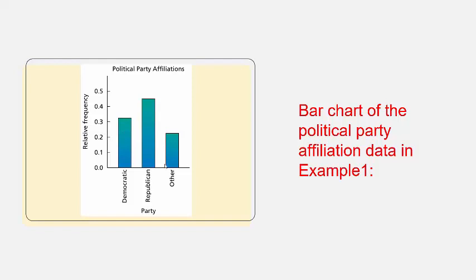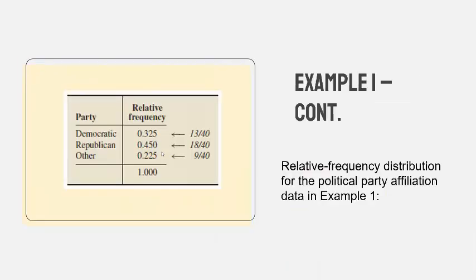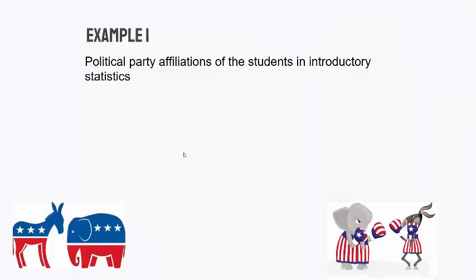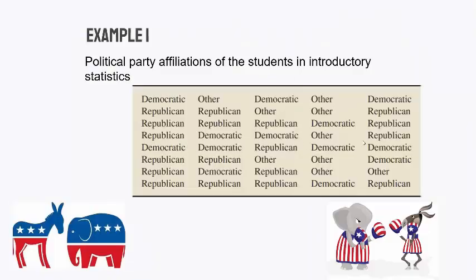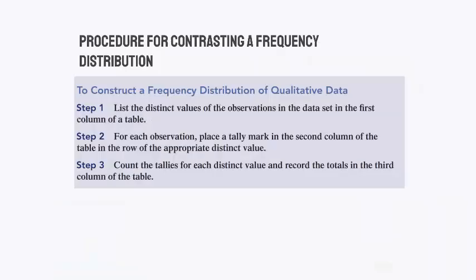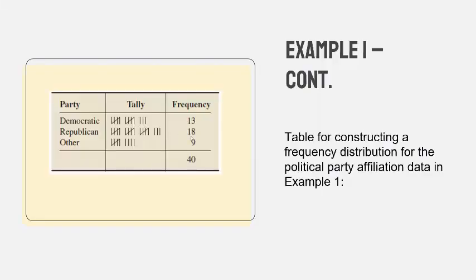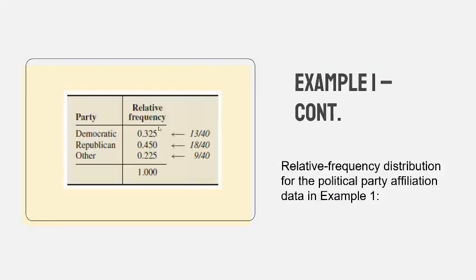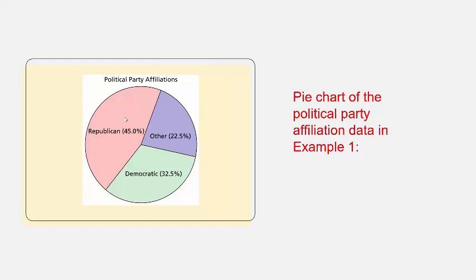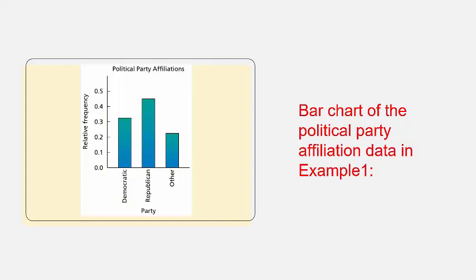In this lecture, we've taken a raw set of data listing Democrat, Republican, and Other, first put it into a frequency distribution table, then a relative frequency distribution table, and then showed the same data visually — first as a pie chart, and then finally as a bar chart.